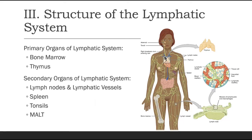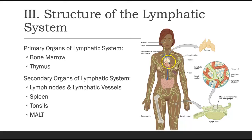The primary lymphoid organs are the bone marrow and the thymus. In young life, bone marrow is found within long bones, but as we mature into adults it's found in flat bones like the skull, vertebrae, and sternum. The thymus — not to be confused with the thyroid gland in the neck — overlays the heart and starts to atrophy as we age, so an adult's thymus is smaller than a child's.